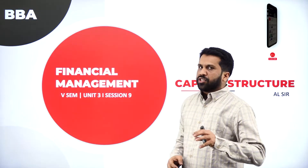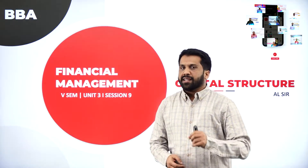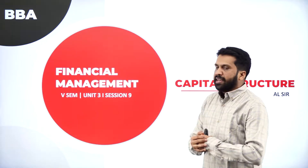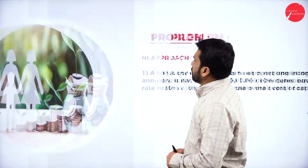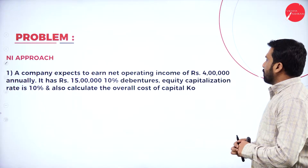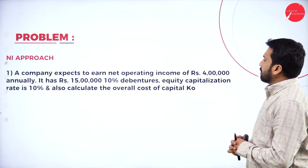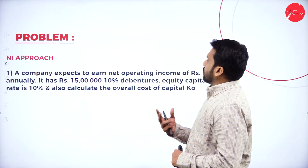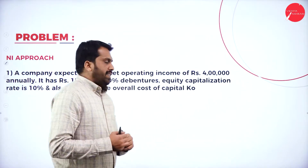Now, what is capital structure? You have done everything with the concept and basic problems. Now we are doing all question paper related problems. Today we will discuss the NI approach. A company expects to earn a net operating income of rupees 4 lakh annually. It has rupees 15 lakh at 10% debentures. The equity capitalization rate is 10%, and we also need to calculate the overall cost of capital, which we call KO.